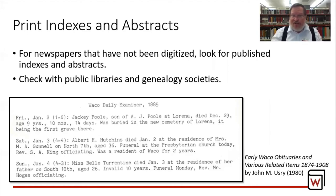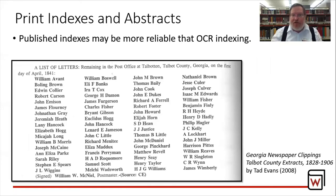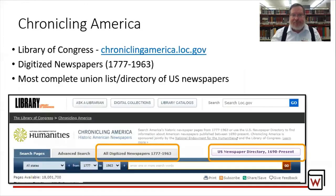Here's an example of the Waco Daily Examiner from 1885 — it's been indexed. Also, when you look at an index, note that it sometimes is just an abstract or a short version of the entire article, and sometimes by looking up the full article you'll find lots more information. Print indexes and abstracts are a lot more reliable than what we call OCR indexing used from online newspaper databases. So step one: look for print indexes. Step two: look for online access.